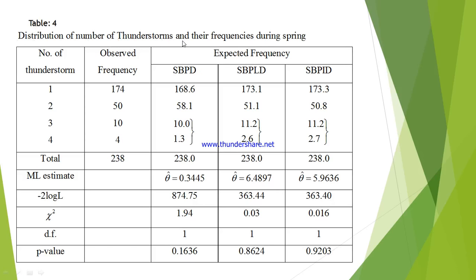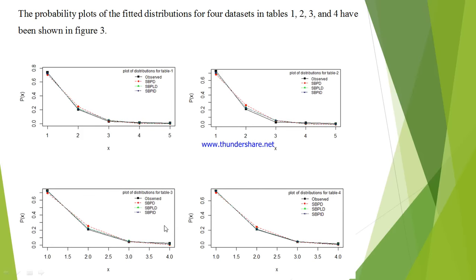In the next table, we described the spring season — same thunderstorm data but recorded during the spring season. This data also gives good results using the size-biased Poisson-STAR distribution, with a chi-square value of 0.016 compared to size-biased Poisson-Lindley and size-biased Poisson distributions. Ultimately, we compare with the help of probability plots, where all distributions have been plotted. Comparing observed and expected probability, the size-biased Poisson-STAR distribution is very close to the observed data.